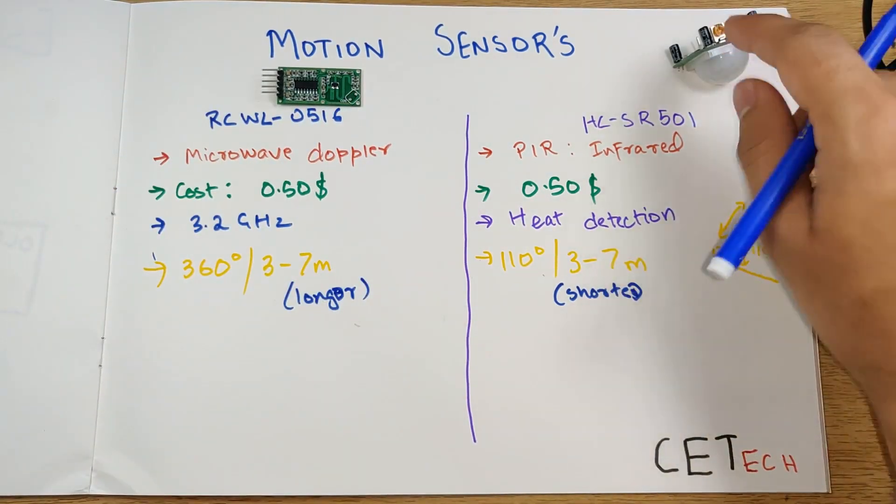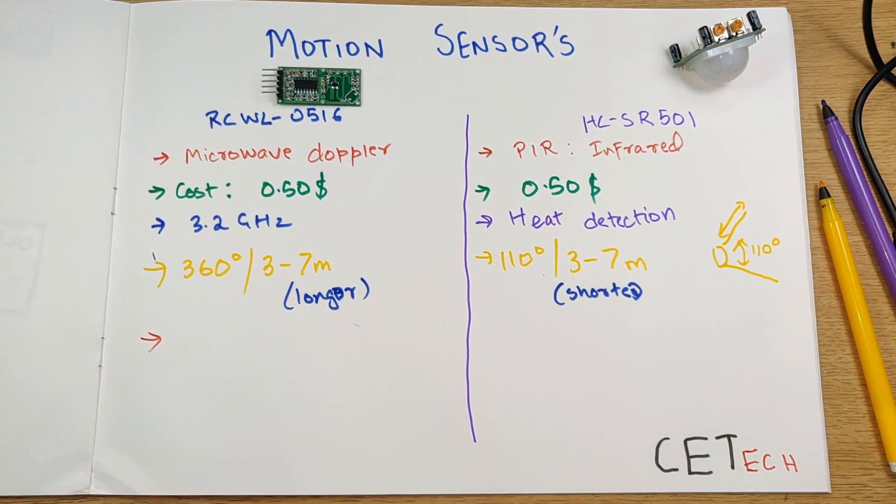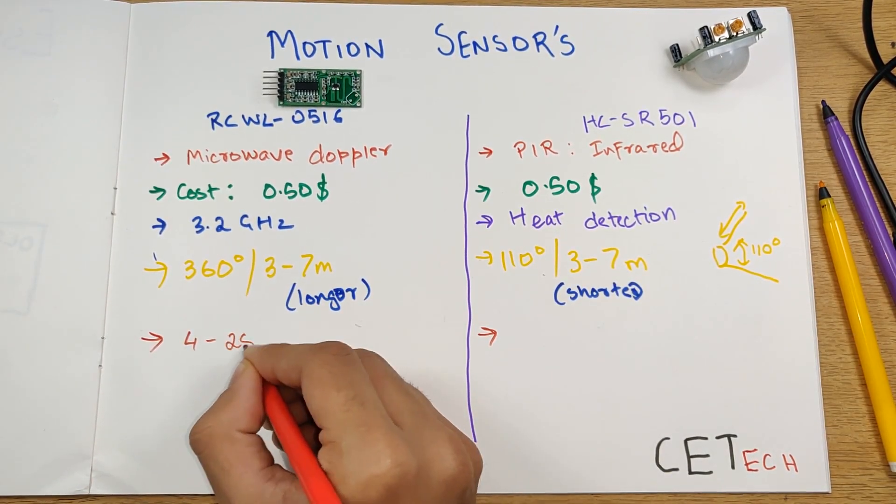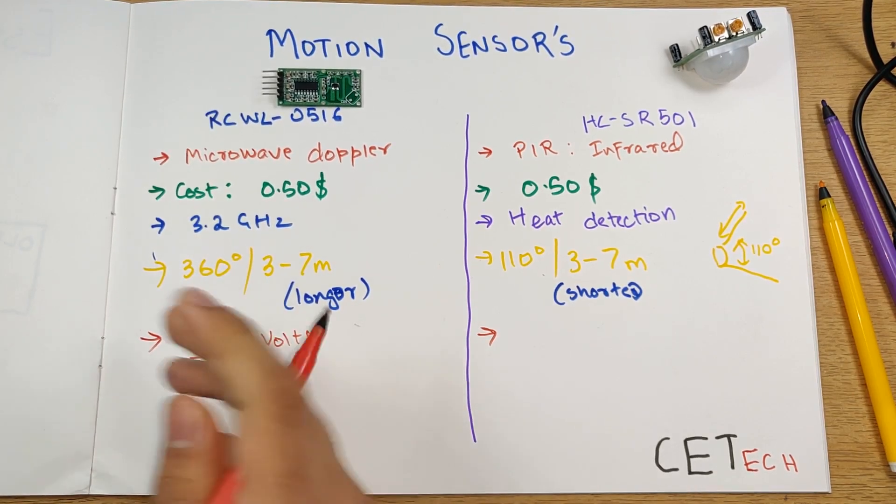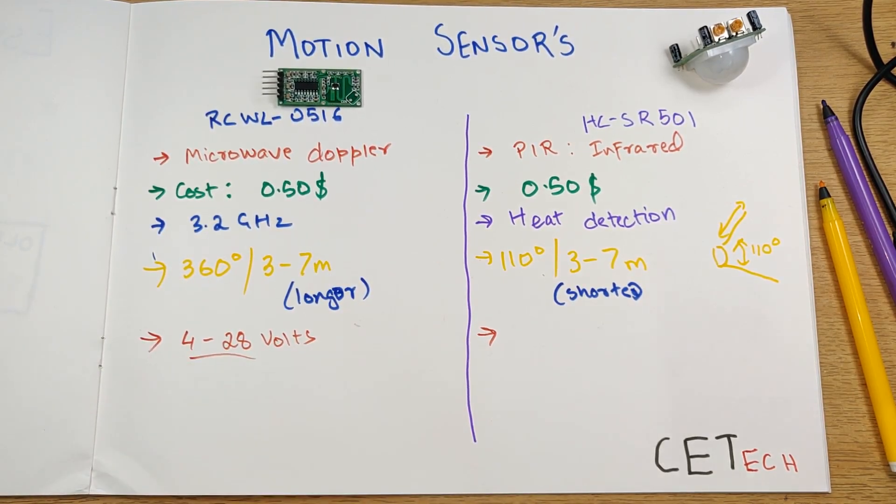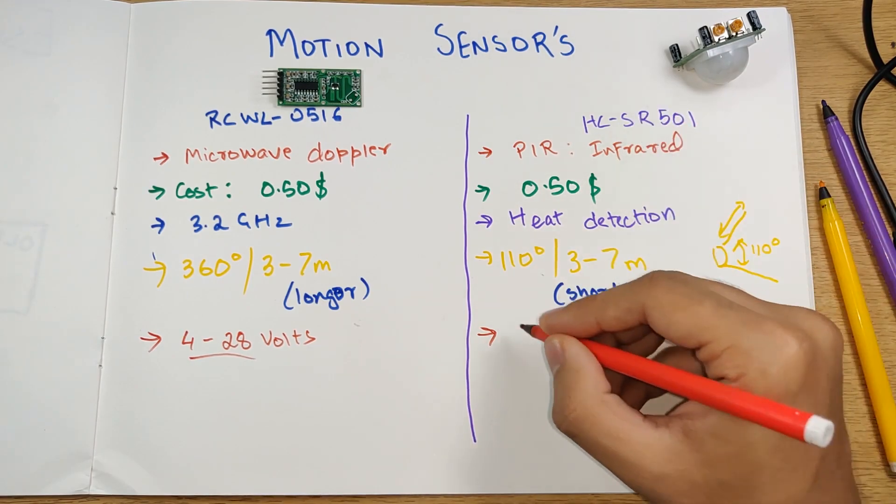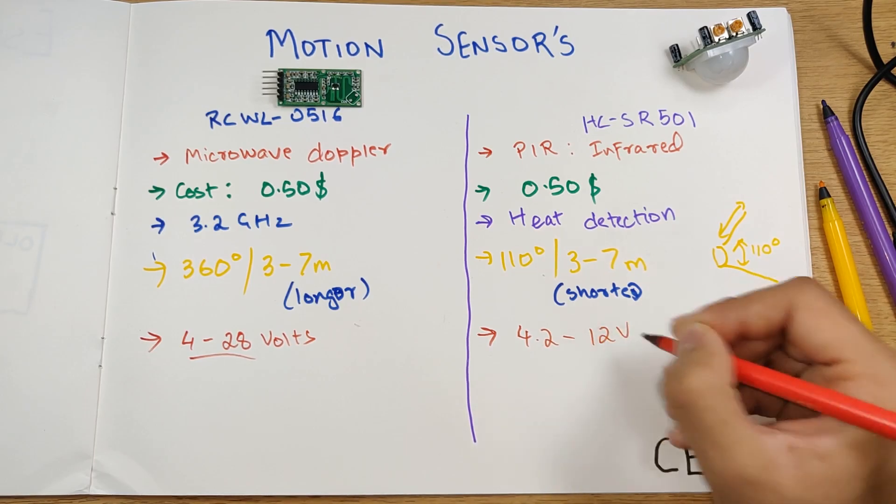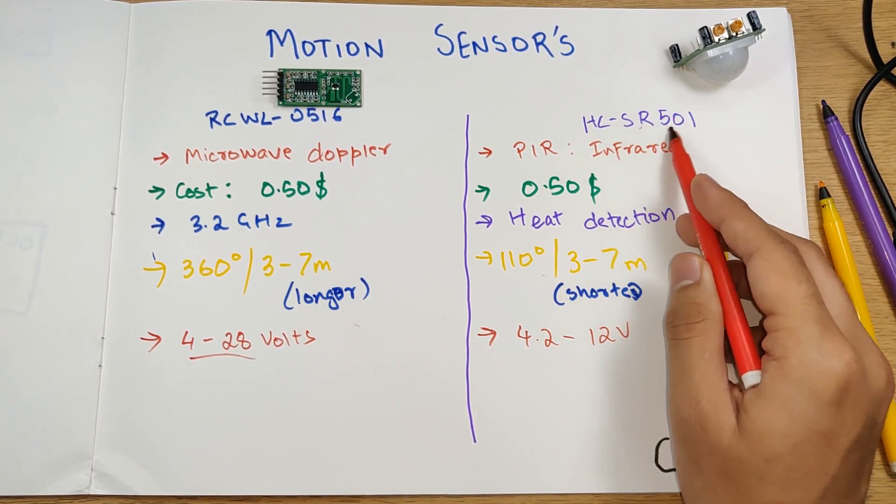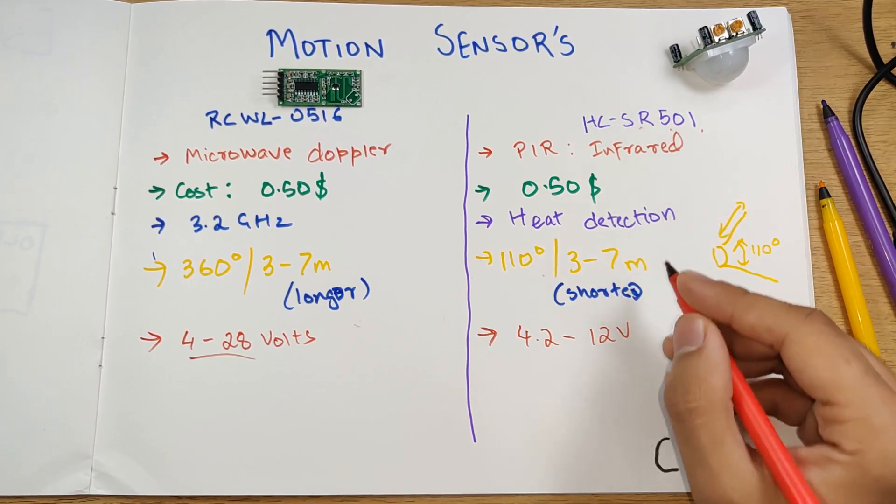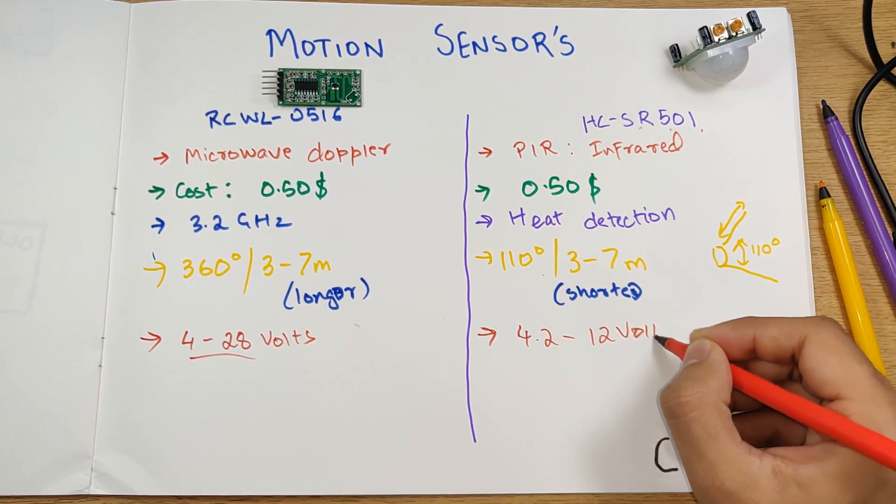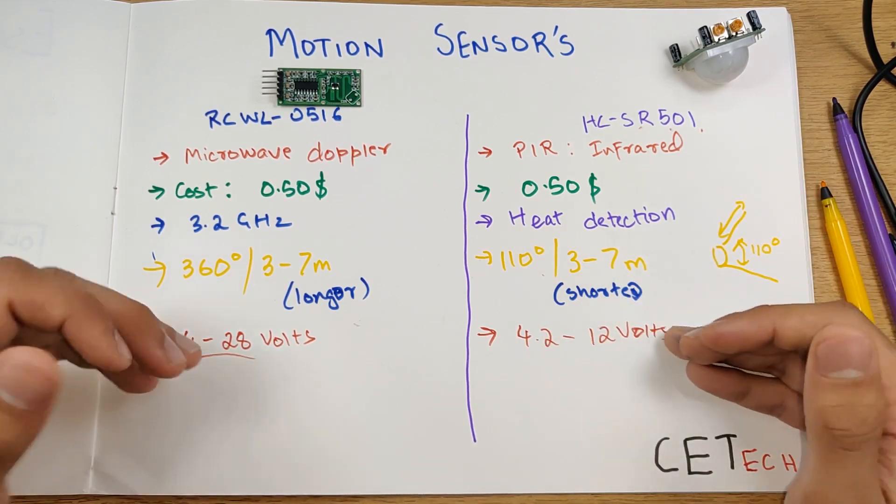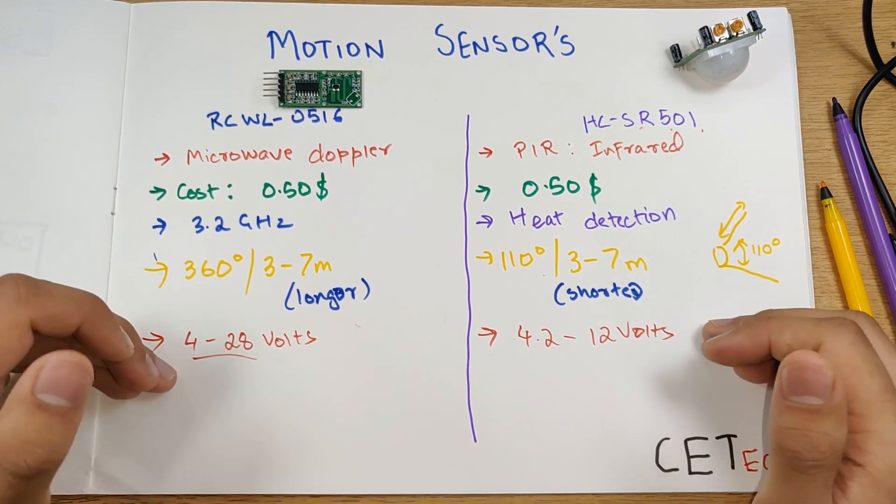Moving on to the technical aspects, this sensor works on a voltage range of around 4 to 28 volts - you have a wide bandwidth over here. While on the other hand, this one can only work from around 4.5 to around 12 volts. There are some sensors of this category which can also work on 3.3 volts but I haven't tested them yet so won't be able to comment on that. This is the voltage range on which these sensors can work in a more practical application.